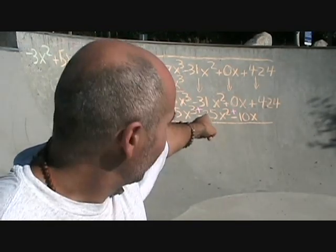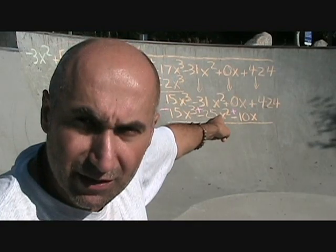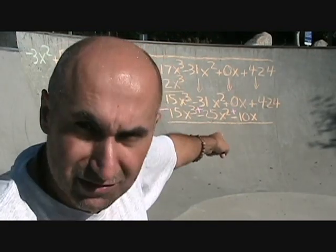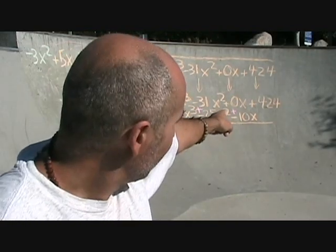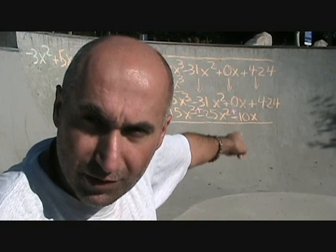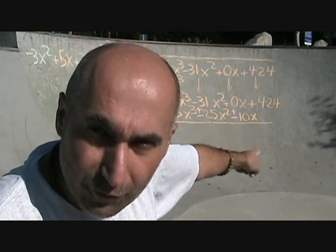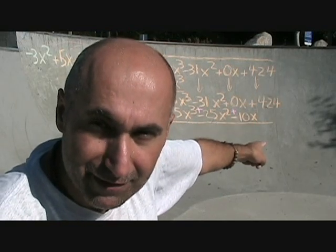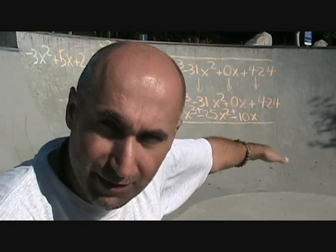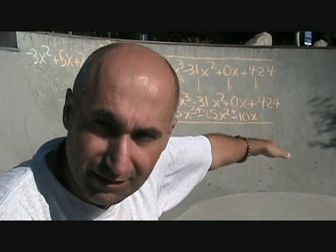That's going to be positive 10x, because it's 0x up top — 0x plus 10x is 10x. And we're going to bring the 424 straight down, transferring everything down at the same time.